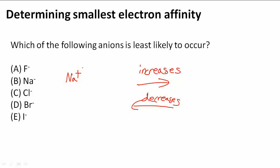However, Na is very much to the left and we know that it loses electrons. So it has the smallest electron affinity. This anion is the least likely to occur.